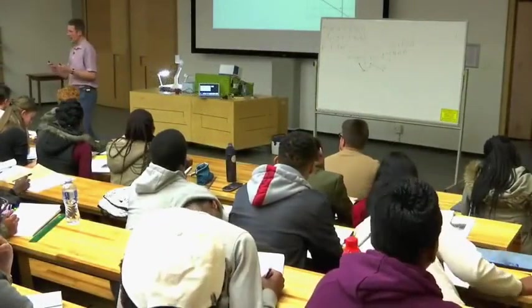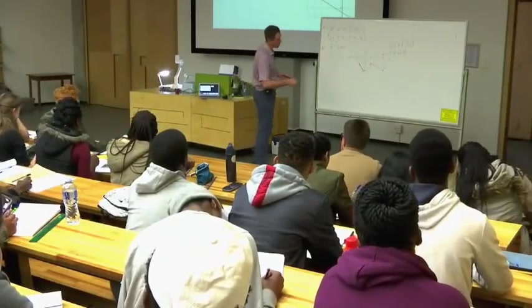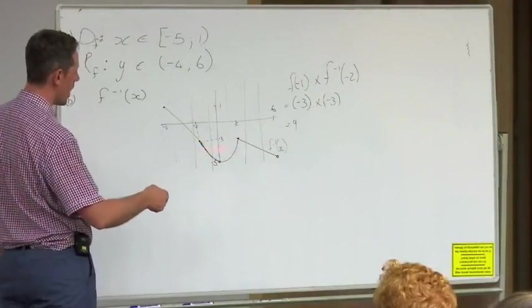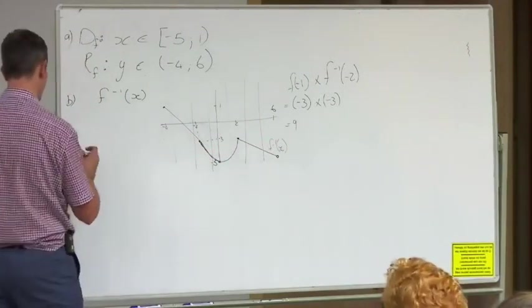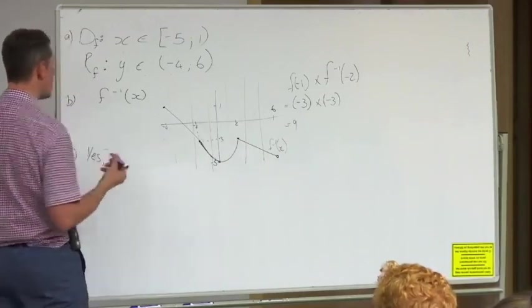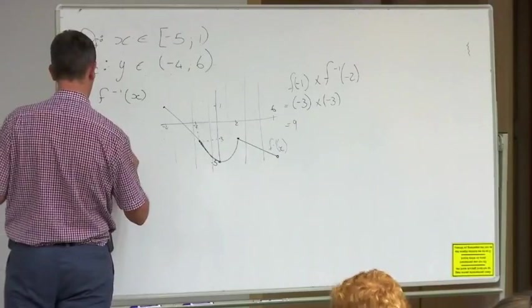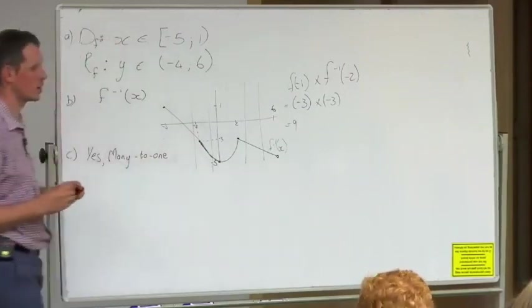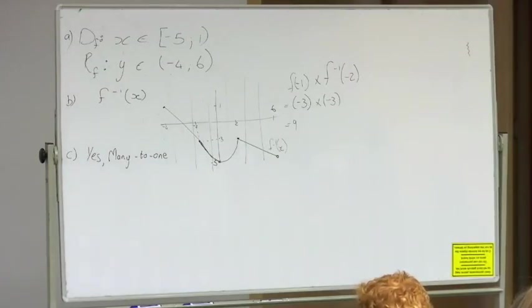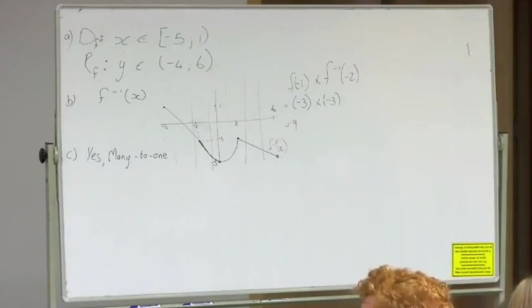You've got to describe the relationship between the x values and the y values. Now there are certain y values where one y value gives you more than one x value. So my answer for c is yes, it is a function. But it is a many to one function. In other words, many x values gives me one y value, and those functions—or those relationships—are functions.